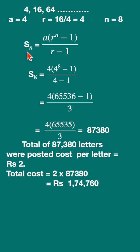This is a geometric series, total number of letters which have been written. So we need the sum. Sn is equal to a into r raised to n minus 1 upon r minus 1.